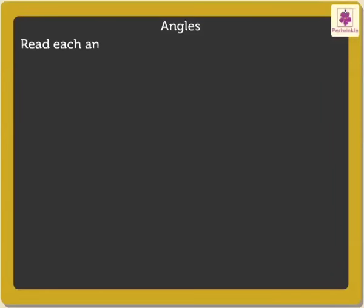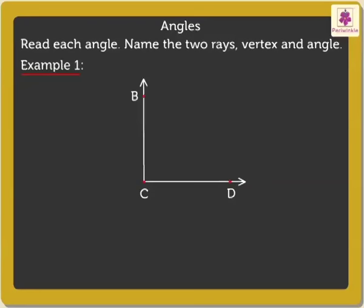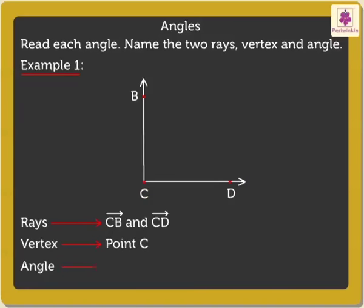Read each angle. Name the two rays, vertex and angle. Look at the figure on the board. The two rays are ray CB and ray CD. Here, point C is the vertex of the angle. Here, the angle is angle BCD or angle DCB.